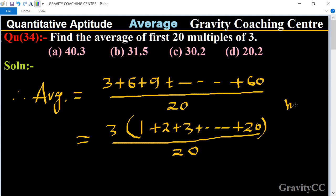Here n is 20, so we have 20 times 20 plus 1 divided by 2. That equals 10 times 21, which equals 210. So we put 3 into 210 upon 20.